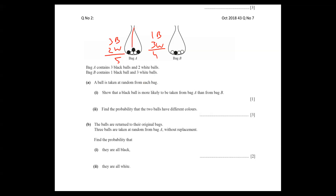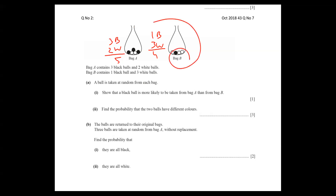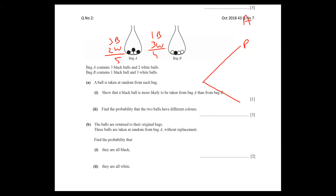A ball is taken at random from each bag — one from Bag A and one from Bag B. You can take in any order, since no order is specified. Random means any order. I like to do this with a diagram, so: Bag A can give either black or white, and Bag B can give either black or white.